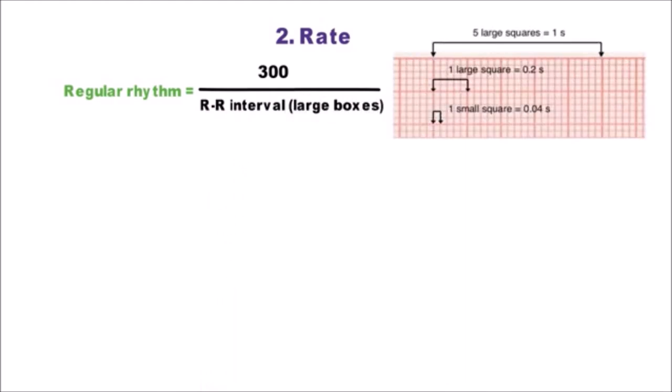And this is an ECG graph paper. If the speed or calibration of ECG machine is 25 mm per second, then one small square corresponds to 0.04 second and one big square to 0.2 second.